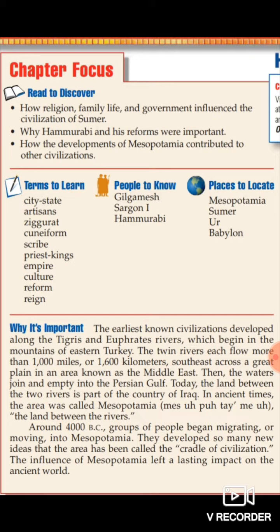What we need to learn is the vocabulary: city-state, artisan, ziggurat, cuneiform, scribe, priest-kings, empire, culture, reform, and reign.